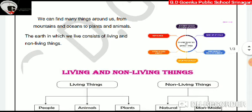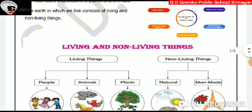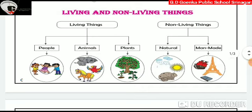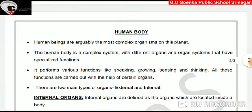Dear students, as we all know, we can find many different things around us, from mountains and oceans to plants and animals. The Earth in which we live consists of living and non-living things. Living things include people, animals, and plants, while non-living things can be natural or man-made.